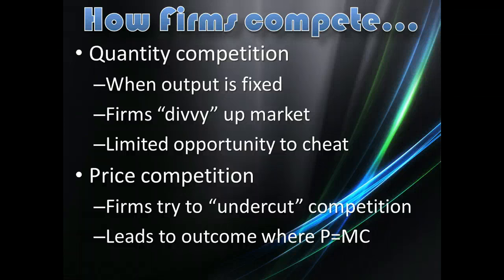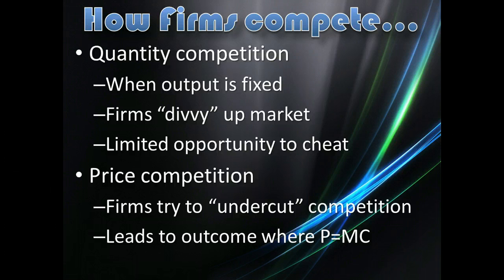Research generally shows that firms tend to engage in price competition rather than quantity competition, in part because quantity competition requires more obvious collusion, which is usually illegal and difficult to get away with. So for the most part, oligopolies compete on price when they choose to cheat. We'll look at more examples of oligopolies and work on some practice problems in class. Make sure to fill out your response form, and we'll see you soon.